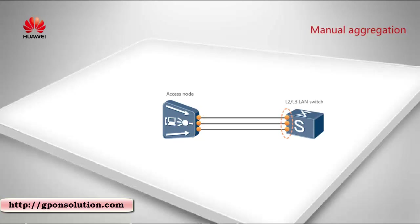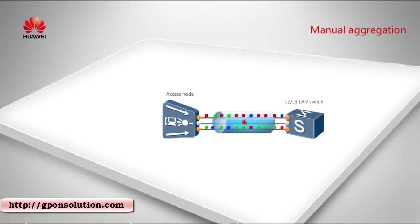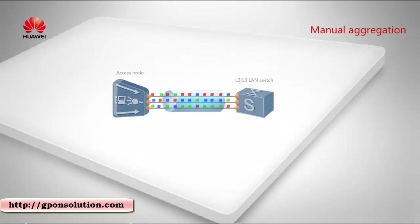Perform similar configuration on the upper layer device. After such configurations, the two interconnected devices will transmit packets through the links. If a link fails when the devices are running, the access device performs calculation again according to the current available links in the aggregation group and transmits packets through the available links to ensure that user services are not affected. After the faulty link recovers, the access device restores the link, performs calculation again according to all the available links in the group, and transmits packets through the links again.